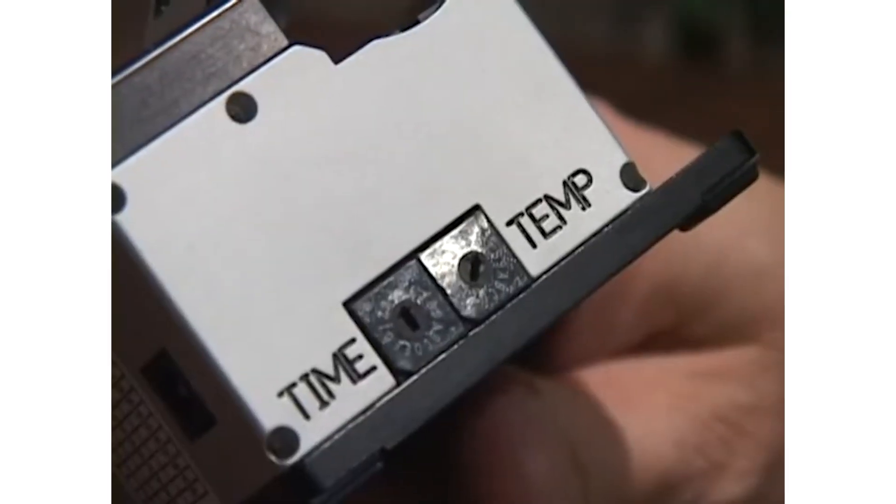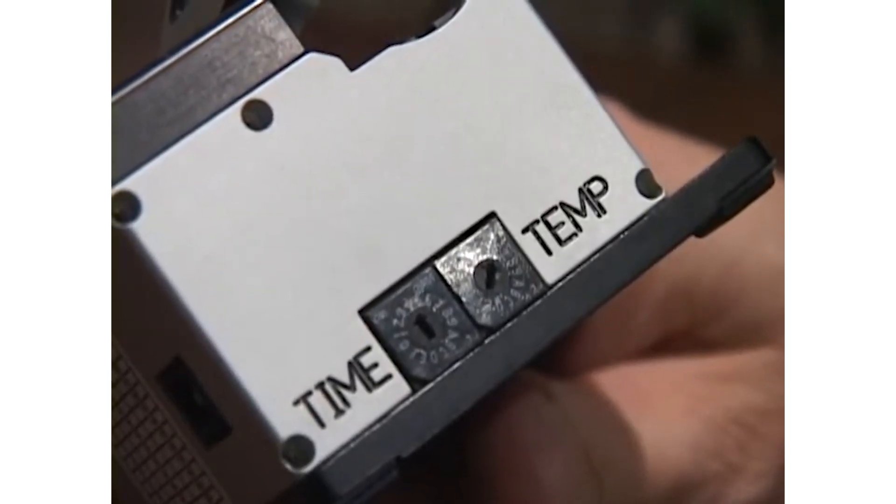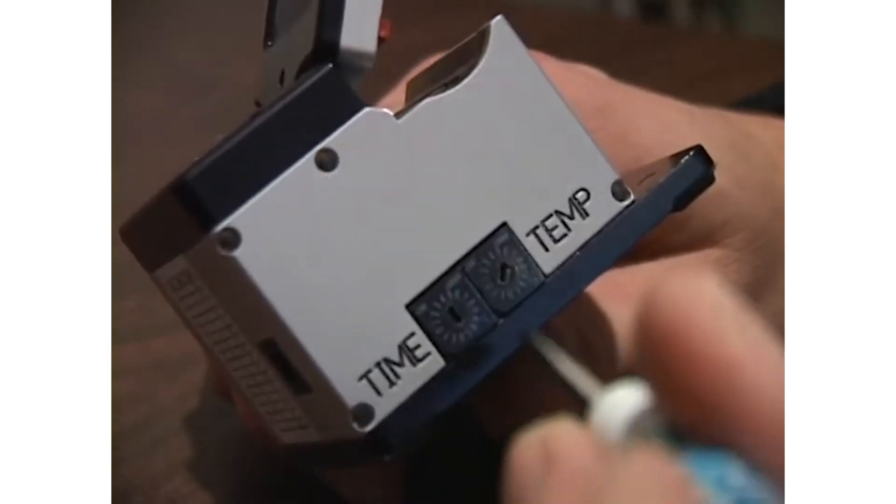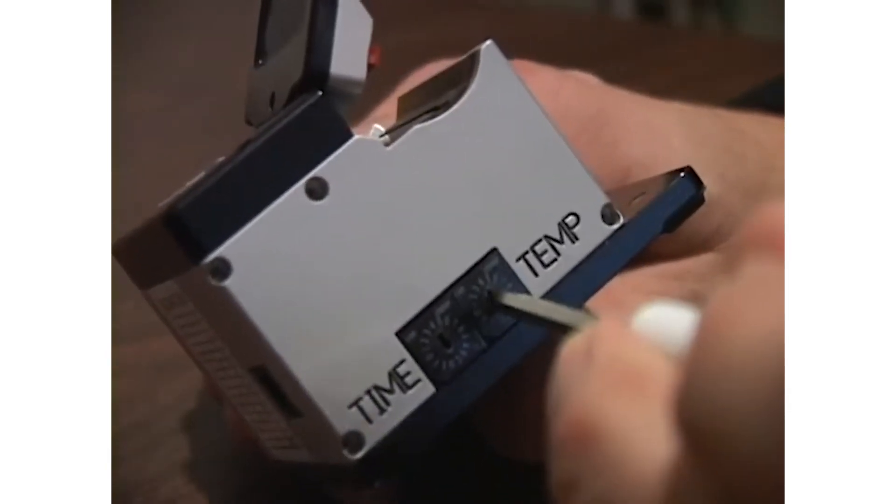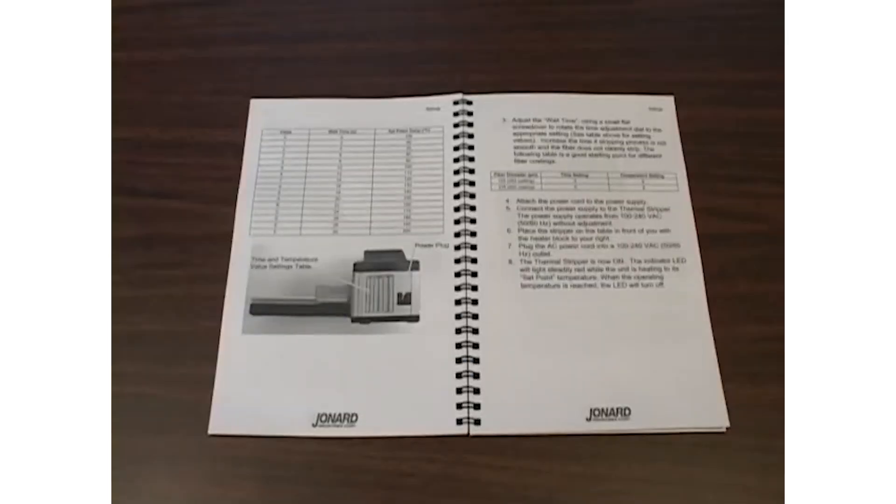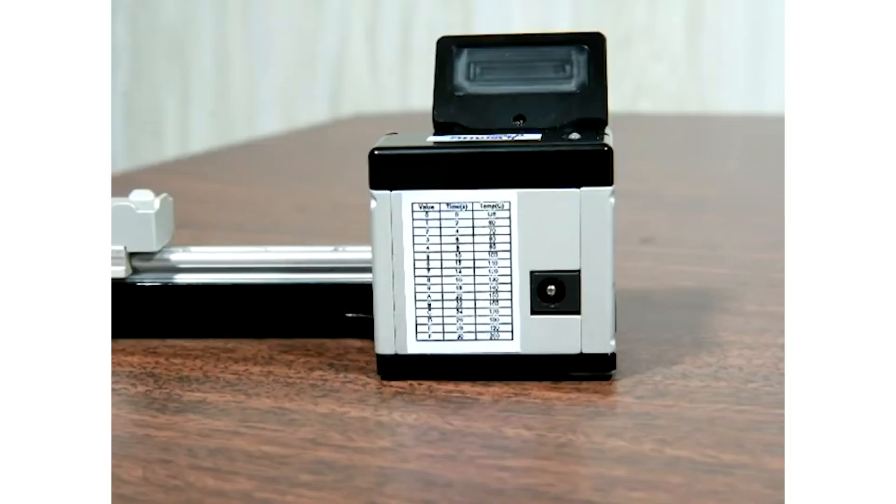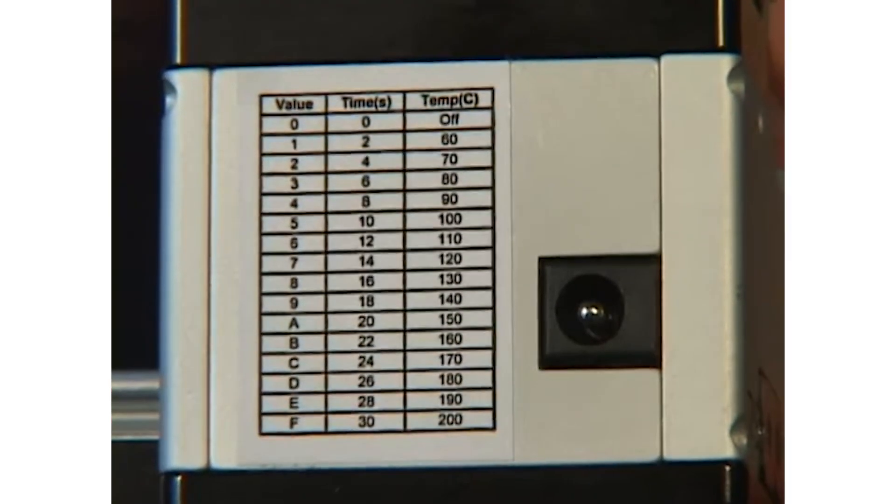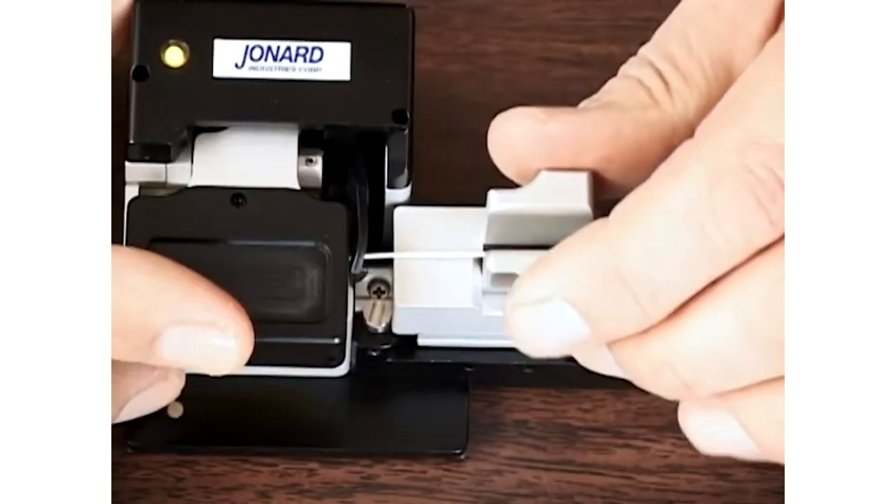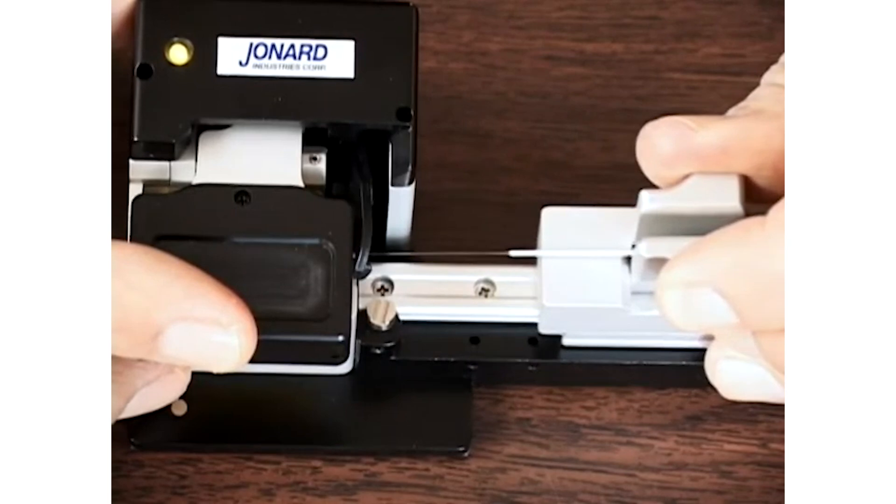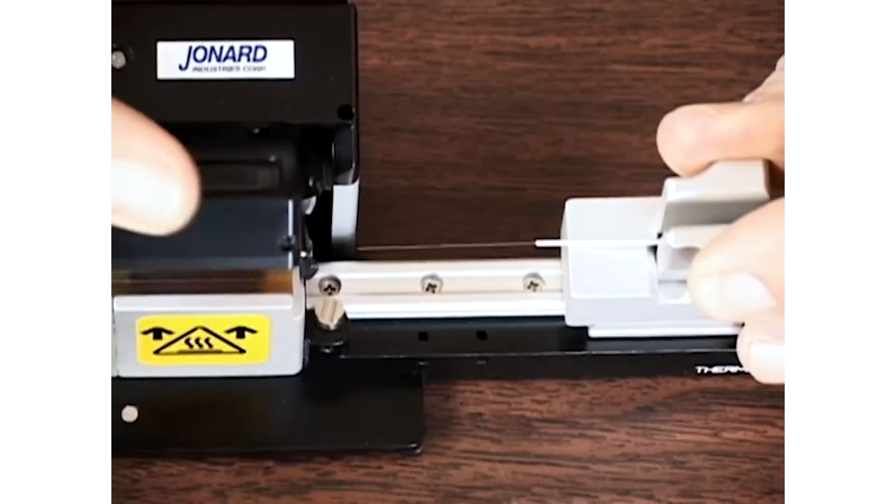For some coating types, you may need to adjust the temperature and time settings to ensure the proper stripping of fiber. To adjust the set point temperature, use a small flat screwdriver to rotate the temperature adjustment dial to the appropriate setting. You can find the adjustment tables in the manual or on the back of the thermal stripper. The factory default for stripping 250 micron coatings is 140 degrees Celsius. Reduce the temperature if melting of the coating is observed.